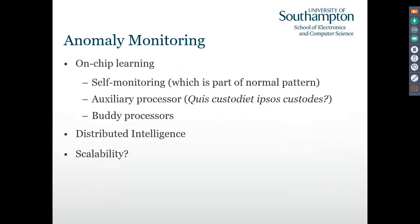What we started to think about was how to do on-chip learning and self-monitoring — what is normal behavior? But if a program goes into a hang state or crashes, how can the processor monitor itself? Can we have an auxiliary processor? That pretentious piece of Latin means 'who watches the watchman' — if you have an auxiliary processor, do you need another one to monitor it, and that way lies madness. Or do we buddy processors up in multi-core systems, or have some kind of distributed intelligence?